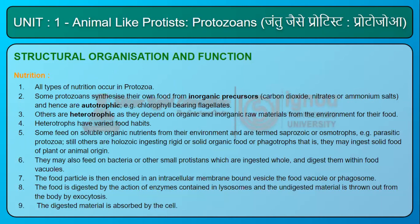Nutrition: All types of nutrition occur in protozoa. Some protozoans synthesize their own food from inorganic precursors — carbon dioxide, nitrates, or ammonium salts — and are therefore autotrophic, e.g., chlorophyll-bearing flagellates. Others are heterotrophic, depending on organic and inorganic raw materials from the environment. Some feed on soluble organic nutrients and are termed saprozoic or osmotrophs, e.g., parasitic protozoa. Still others are holozoic, ingesting solid organic food as phagotrophs — they may ingest plant or animal material, bacteria, or other small protists, which are ingested whole and digested within food vacuoles.